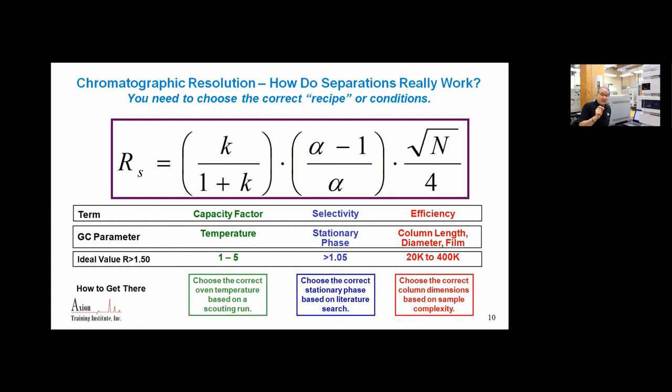This little k should be between one and five. If your k is less than one, your GC is too hot. Cool it down. Lower your column temperature. If your little k capacity factor is greater than five, you're wasting time. Heat that thing up. Get those peaks off the column. Capacity factor tells us, do we have the right temperature for the separation? It's like the Goldilocks thing, right? Not too cold, not too hot. We need it to be just right. Capacity factor tells us if we have the right temperature.